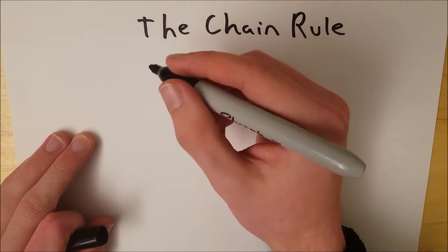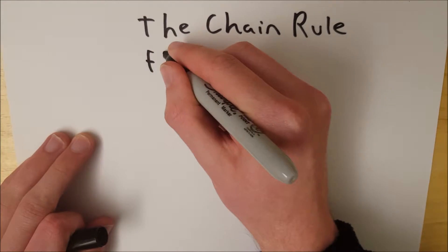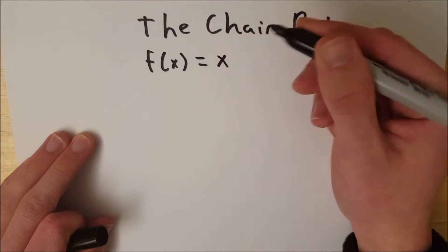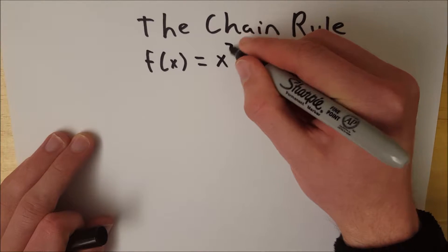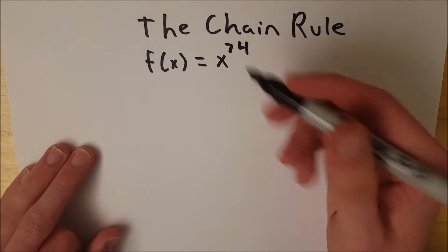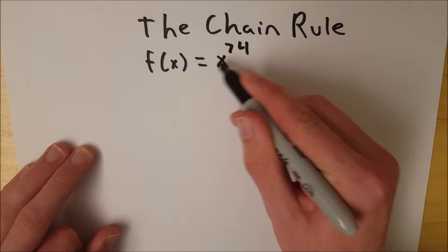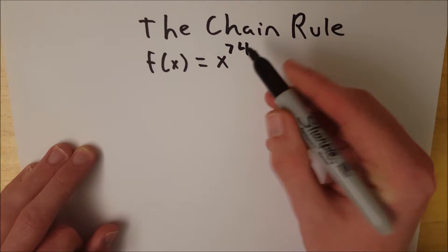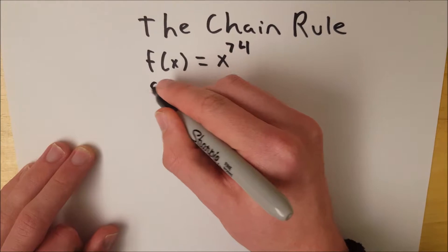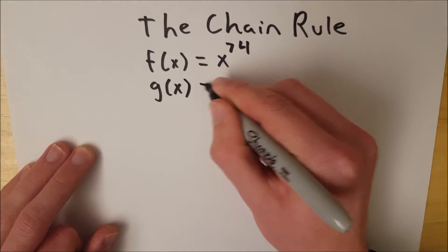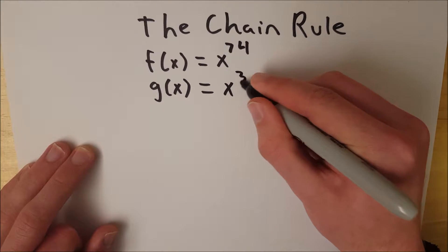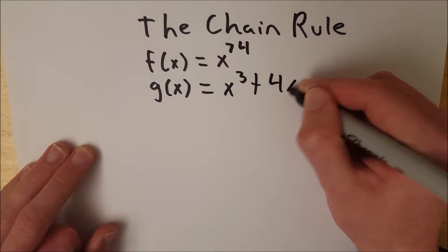So let's say we have a function f of x equals x to the power of let's say 74. Taking the derivative of this function would be pretty easy, you just bring the 74 down here, multiply by the x and drop the exponent by 1, so you'd have 74x to the power of 73. Pretty simple. And let's say we had another function g of x and let's say that was equal to x cubed plus 4x plus 7.